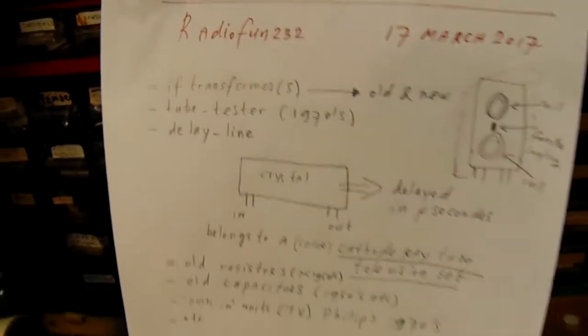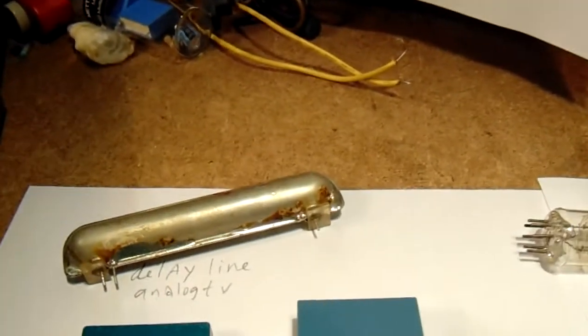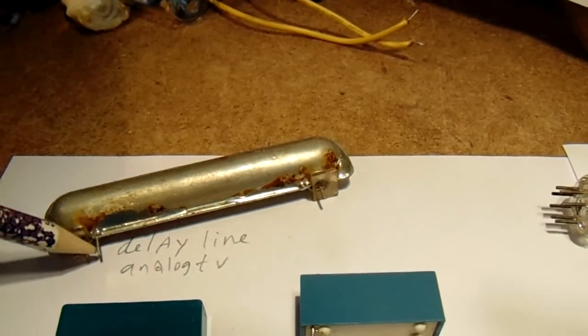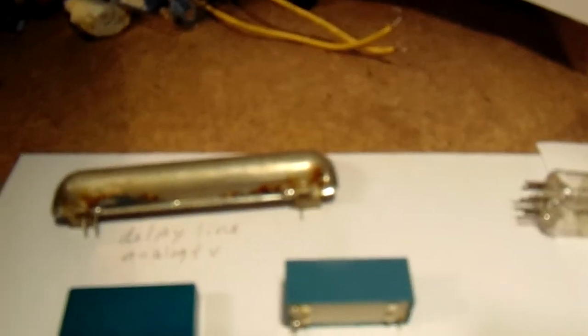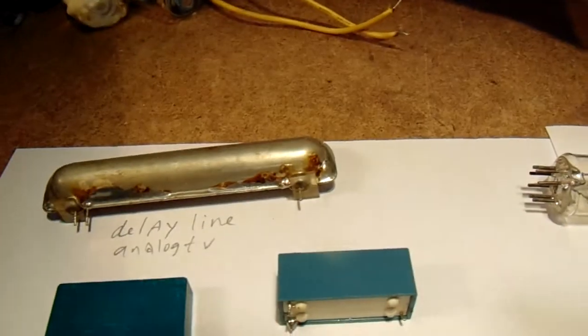Here's the delay line. The delay line was used in analog television sets in the color unit.